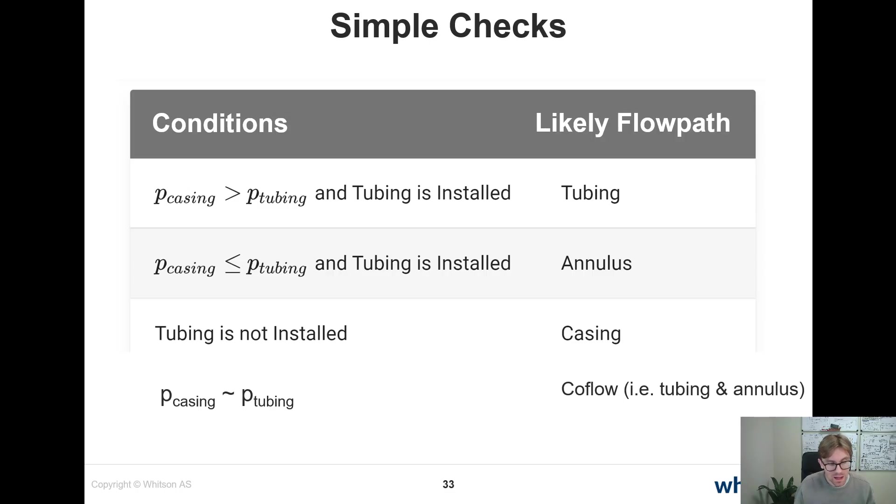The last thing is if your casing pressure and tubing pressures are almost the same, they're similar, then in many cases you're actually dealing with coflow. The reason why companies would go in and do that is that they want to save money on future workovers. So they install tubing from day one, and then they produce up the annulus and the tubing at the same time until a period of time where they would like to turn tubing on. But instead of doing a well intervention at that point, they just start to flow up the tubing only or the annulus only. So this is our solution space. I would like you to keep these rules in mind when you look at bottom-hole pressures.